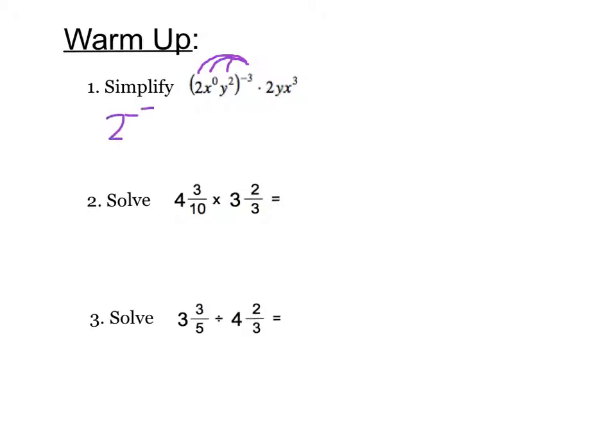Remember when working with exponents, you have to distribute the exponent outside into everything inside. So we have 2 to the negative 3, x, and here we multiply 0 times negative 3 would be 0, y to the negative 6, times 2y, x cubed.